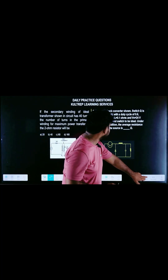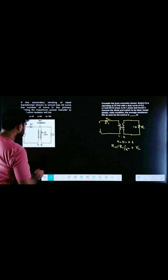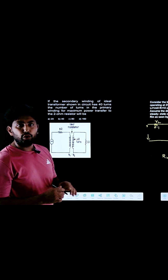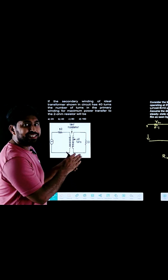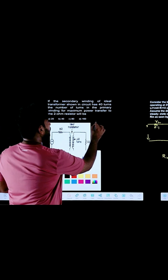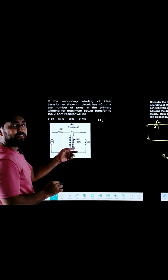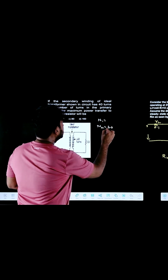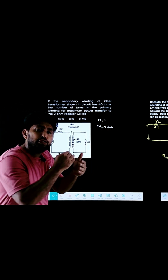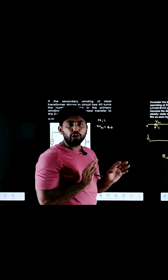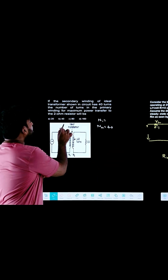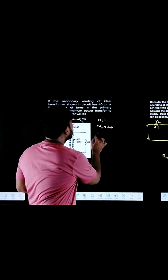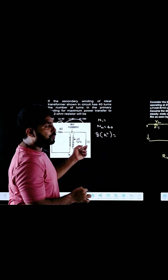Now let us solve the questions so you can understand. First, consider the transformer problem. We need to find the primary turns N1, given N2 = 40 turns and primary resistance = 8 ohms. To transfer maximum power, the primary resistance moved to the secondary should equal 2 ohms. So: 8 × k² = 2 ohms.